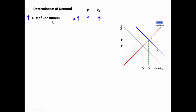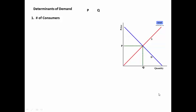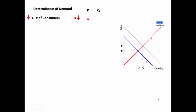the number of consumers goes up, demand increases, causing the curve to shift to the right, driving the price up and the quantity up. If the number of consumers goes down, this decreases demand, causing the curve to shift to the left, driving the price down and the quantity down.